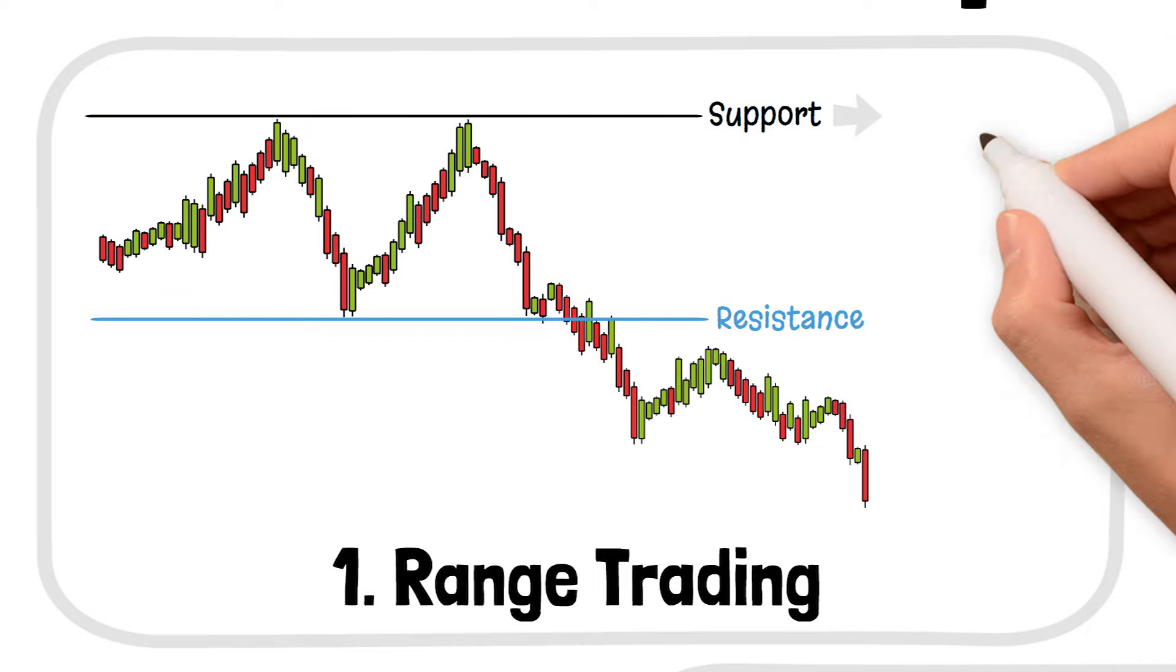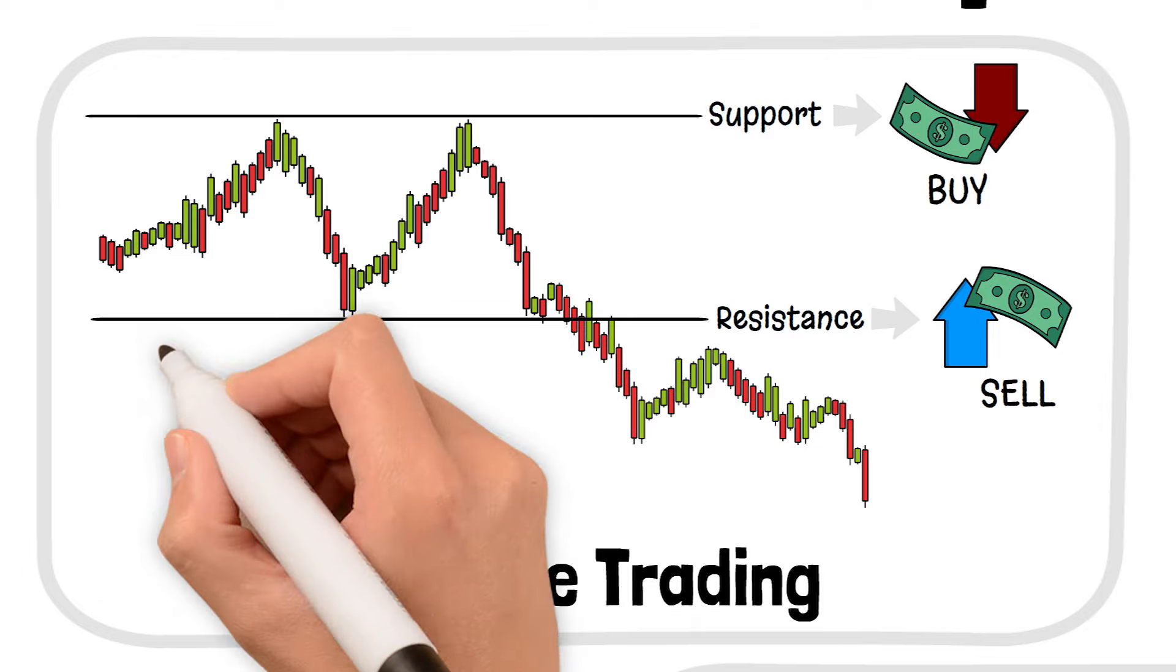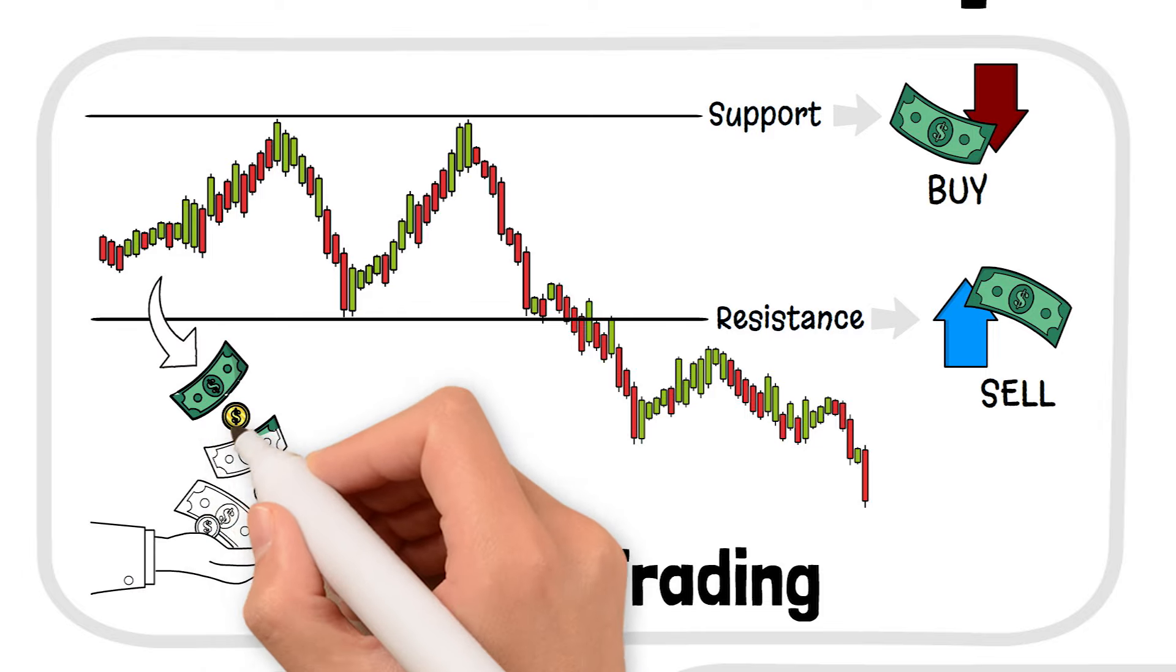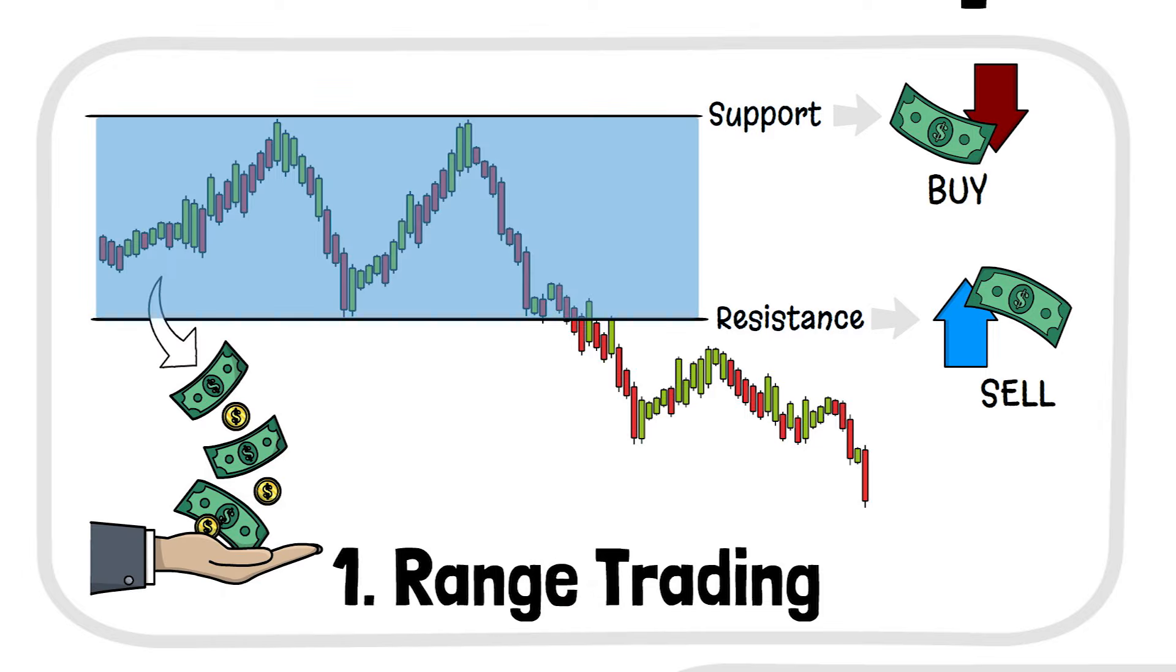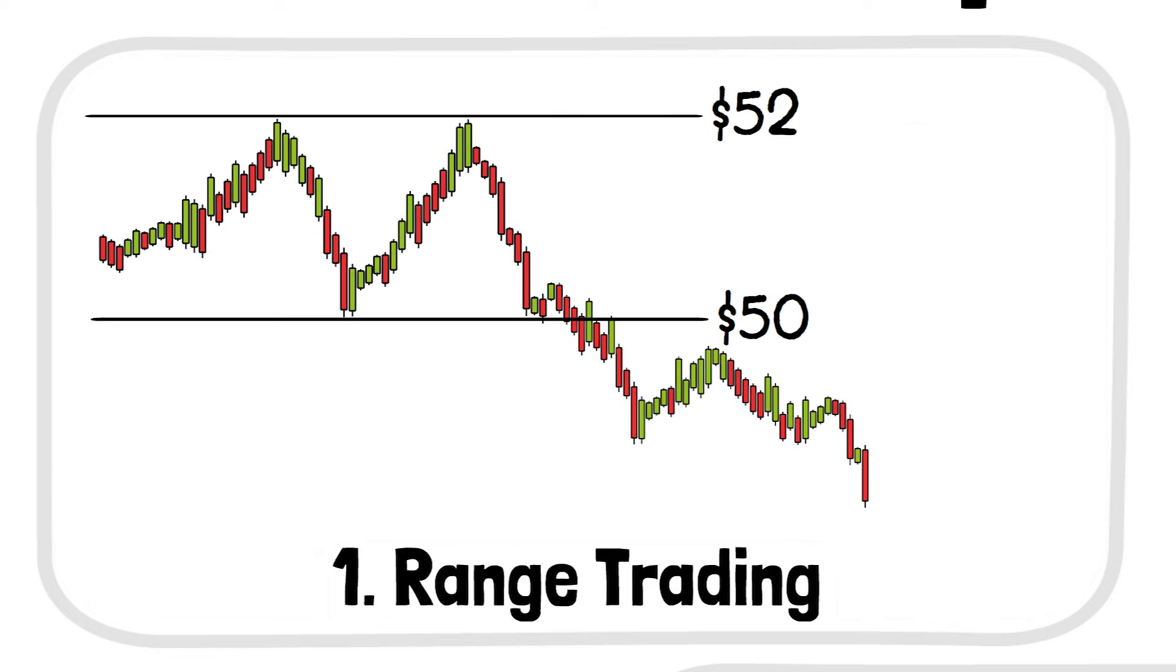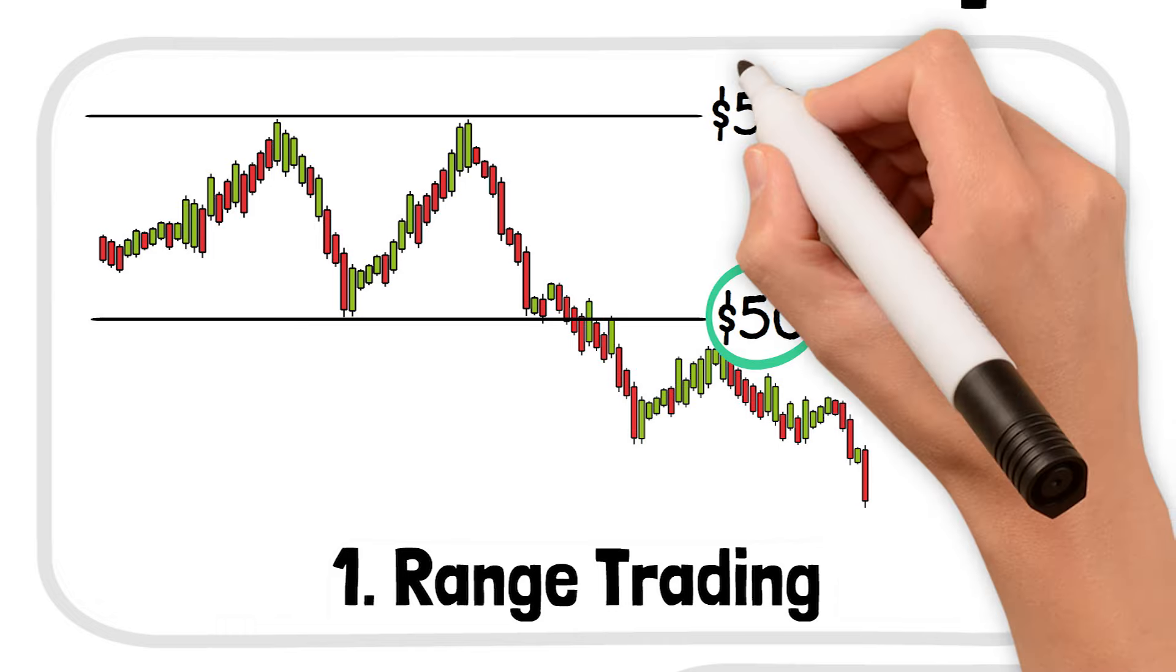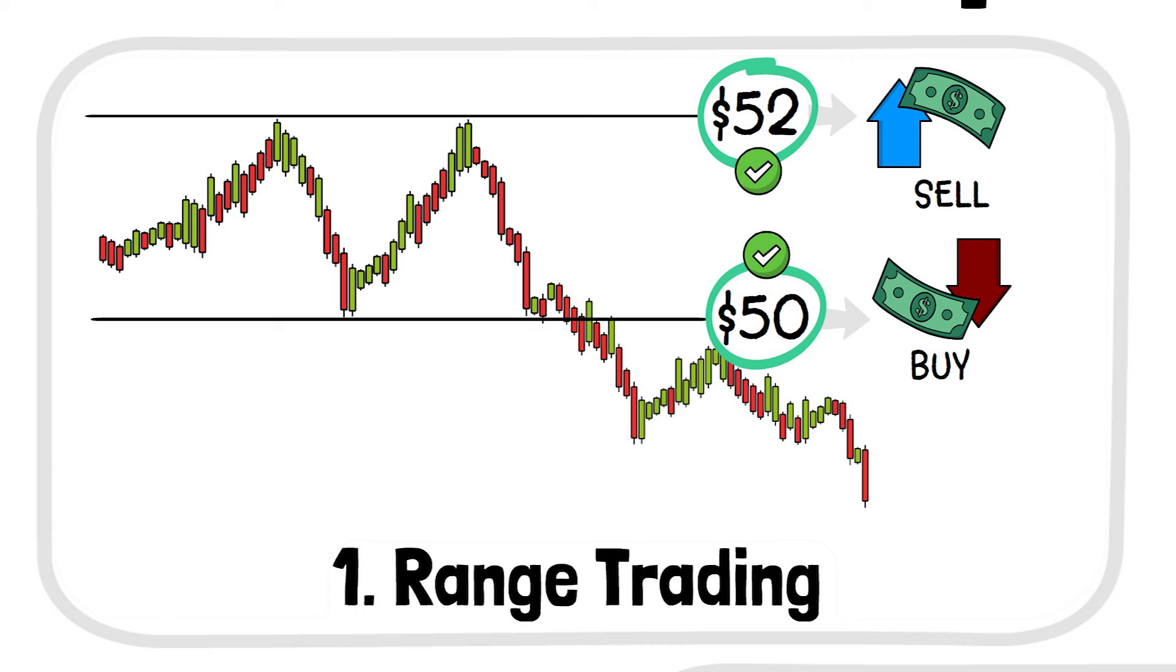When the price hits support, you buy, and when it hits resistance, you sell. The goal here is to capitalize on those small, predictable price movements within the range. For example, if a stock or crypto is bouncing between $50 and $52 repeatedly, you'd aim to buy around $50 and sell around $52 repeatedly. This strategy works best when the market is in a stable, sideways pattern.